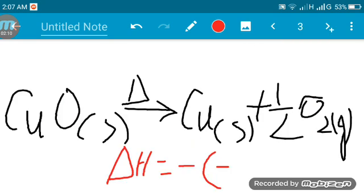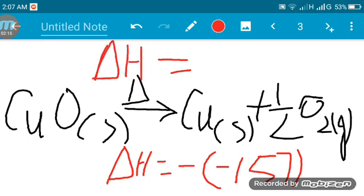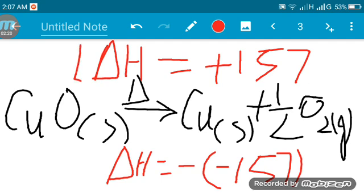We actually get a positive value. The enthalpy is plus 157. So taking the reverse reaction, the product becomes reactant and reactant becomes product. So we can conclude this. The answer to this question: it becomes positive 157.